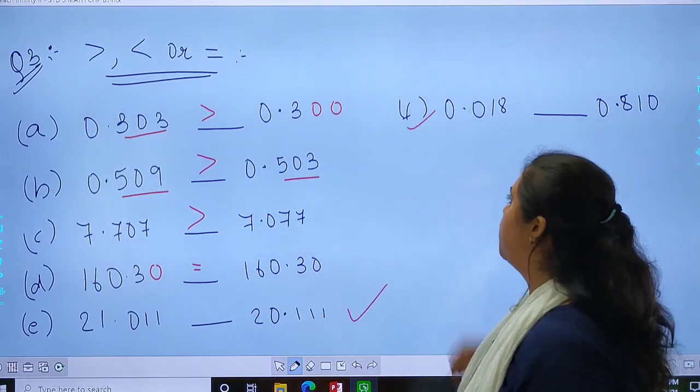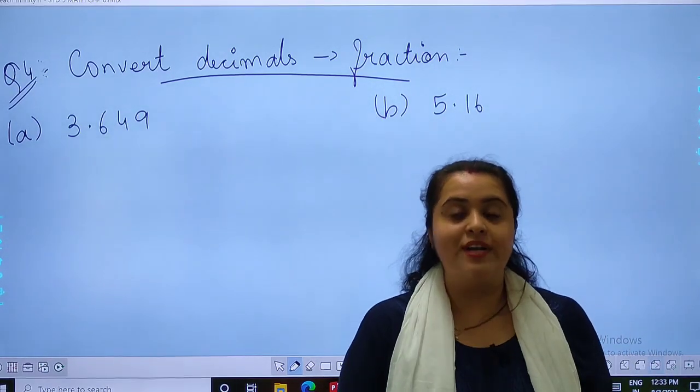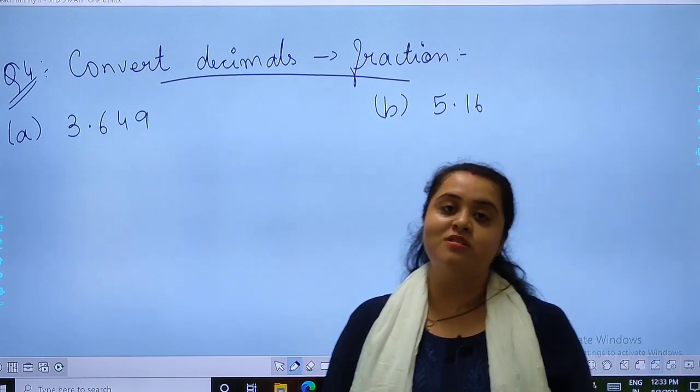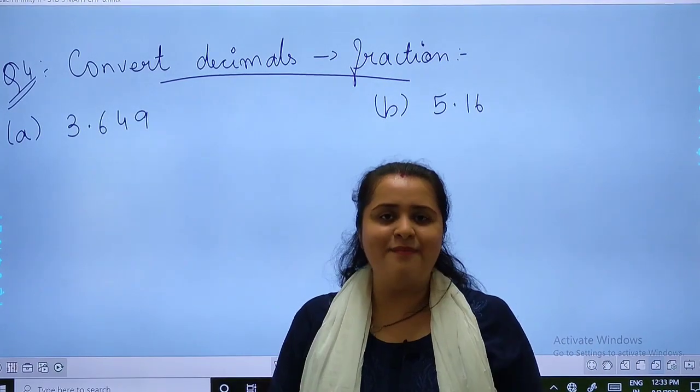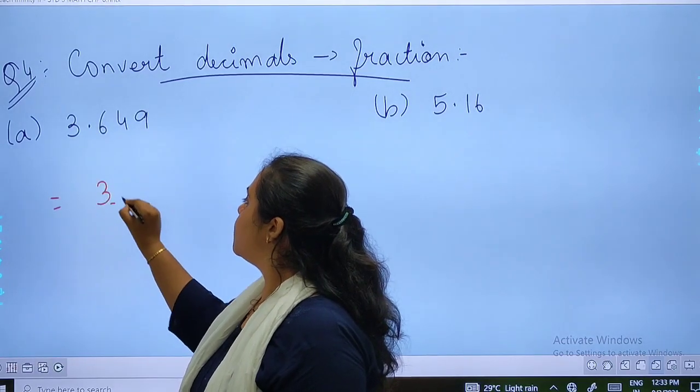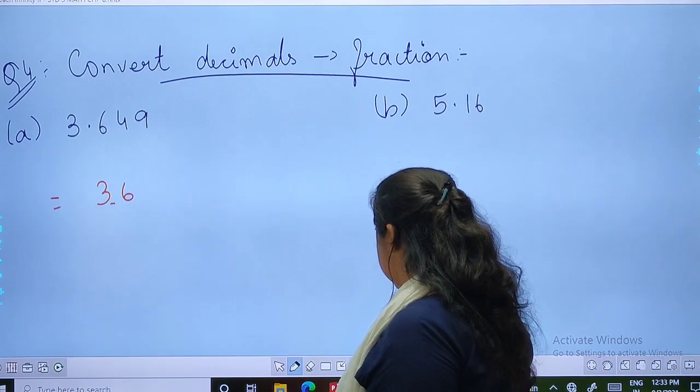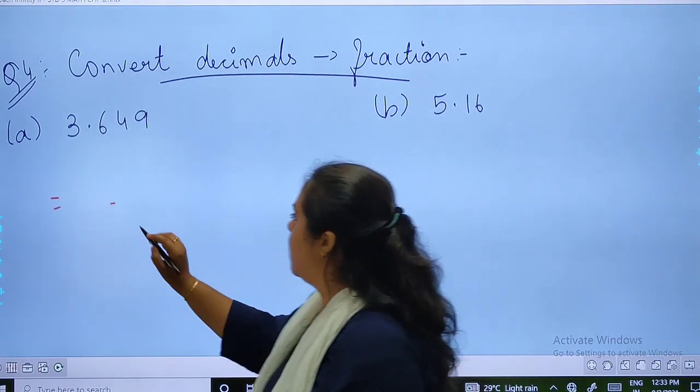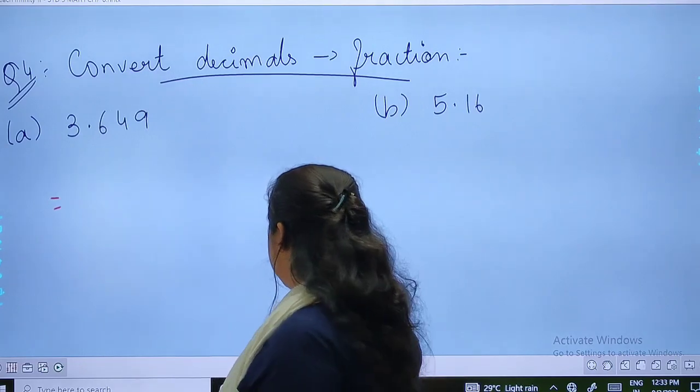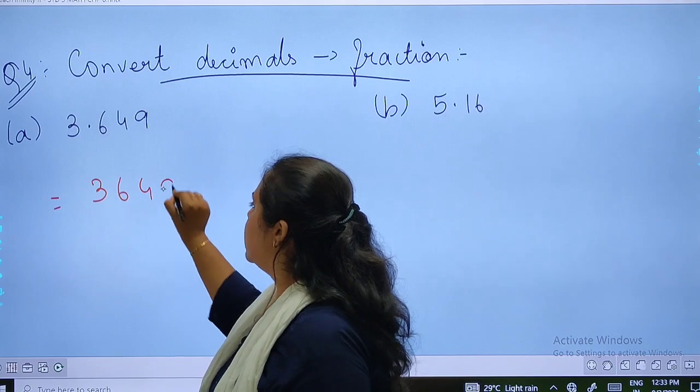Now let's move to question number 4. That is, convert decimals into fractions. This topic is easy. What you are supposed to do? First, we will write the digits as it is.